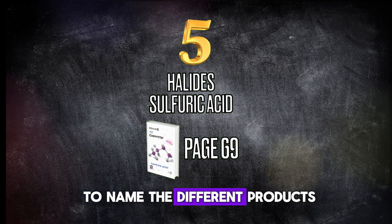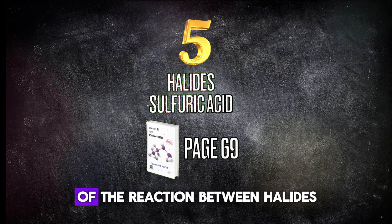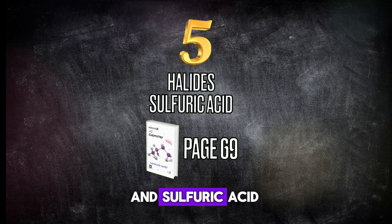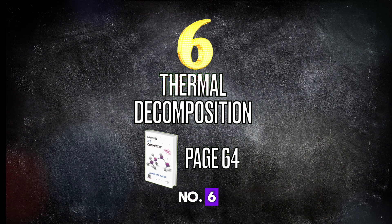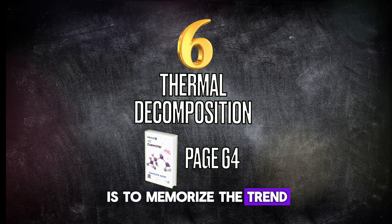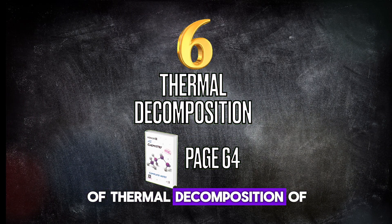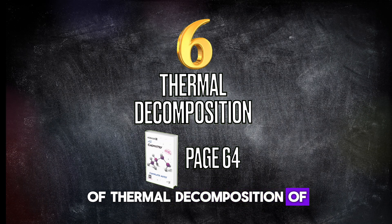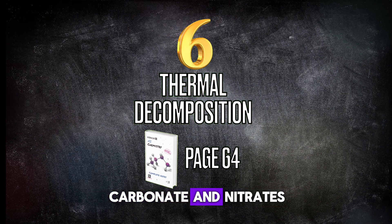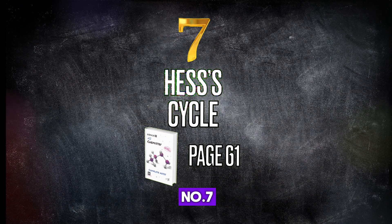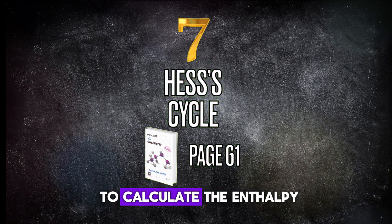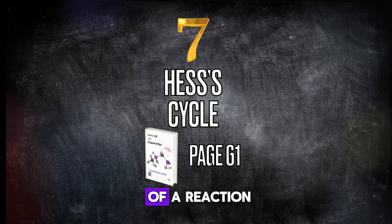Number five, which is highly important, is to be able to name the different products of the reaction between halogenoalkanes and sulfuric acid. Number six is to memorize the trends of thermal decomposition of Group 2 carbonates and nitrates.